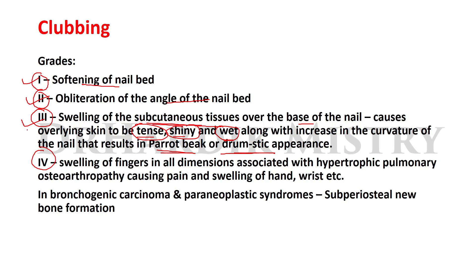In Grade 4 clubbing, there is swelling of the fingers in all dimensions, associated with hypertrophic pulmonary osteoarthropathy, causing pain and swelling of the hand and wrist joint. In conditions of bronchogenic carcinoma and paraneoplastic syndromes, subperiosteal new bone formation specifically occurs.